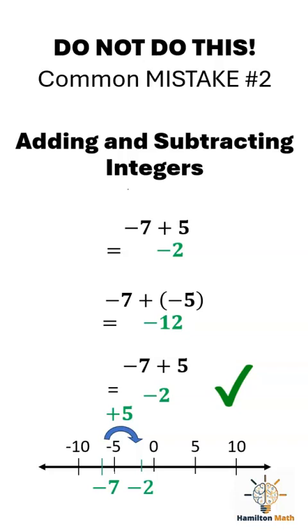So here's the takeaway. Pay attention to the signs. Adding a negative, go left. Subtracting a negative, flip it and add. Two negatives in a row, they cancel out.